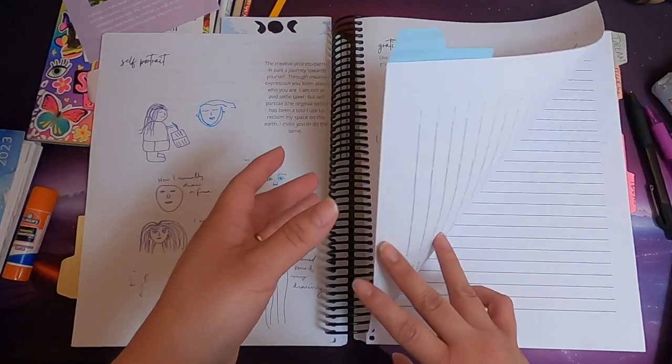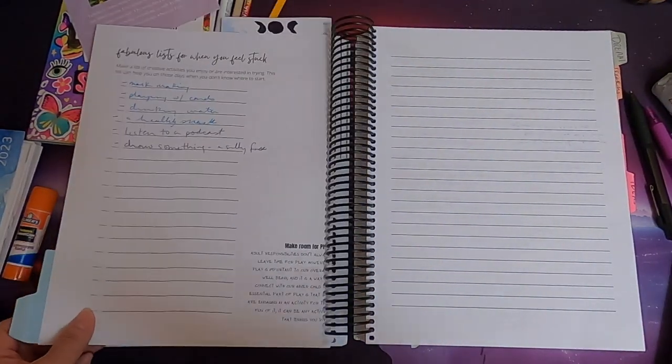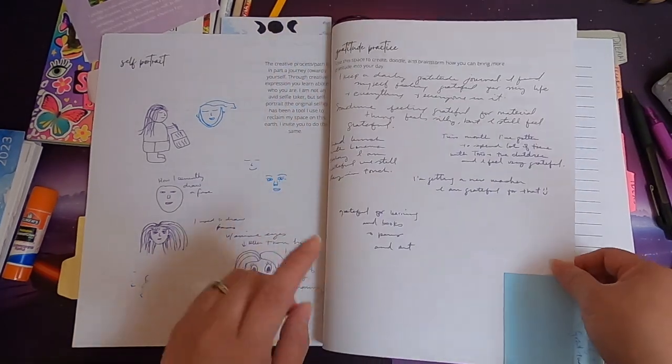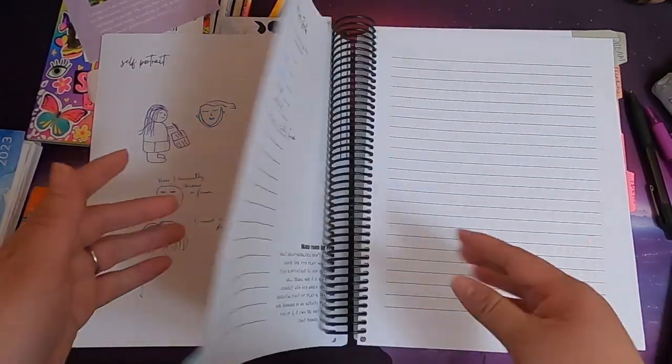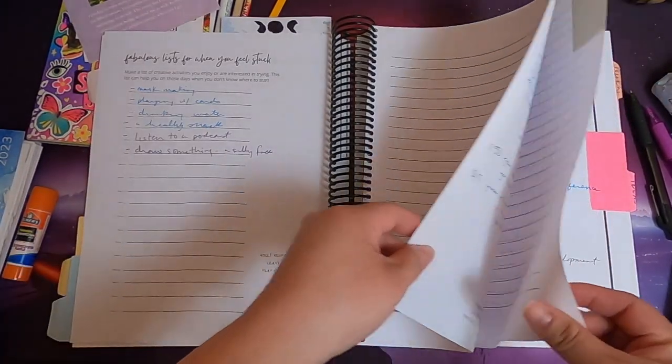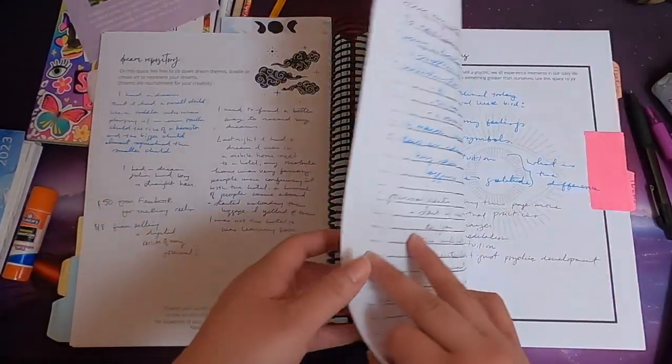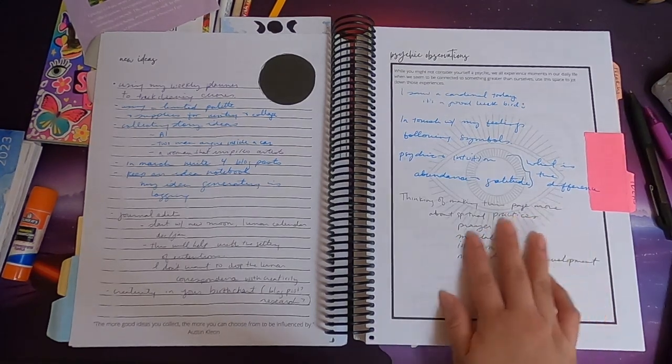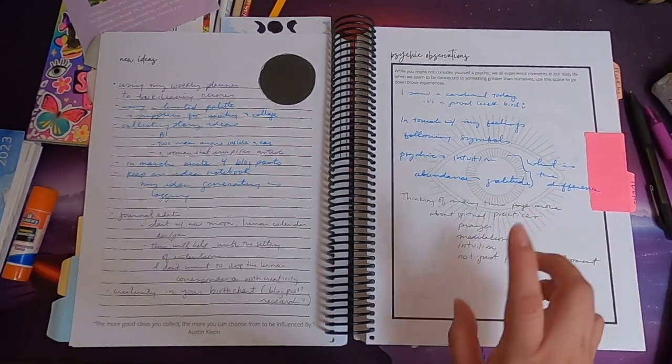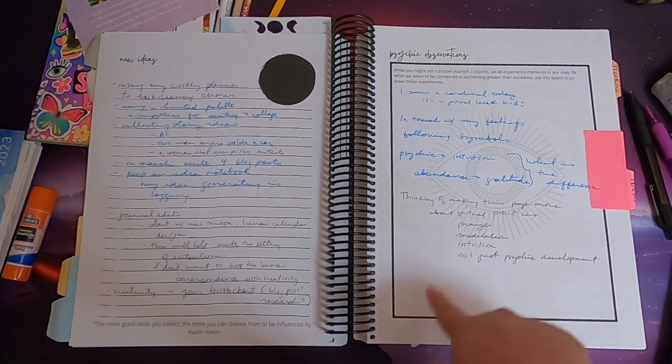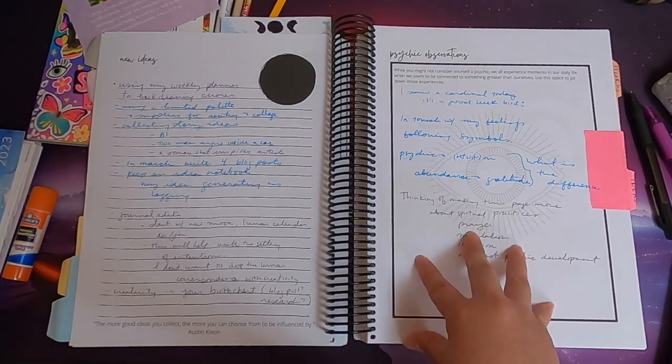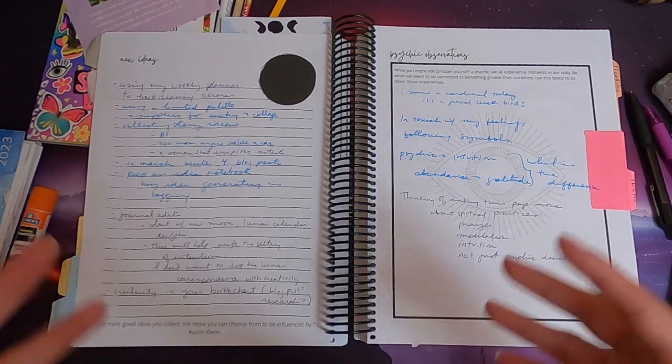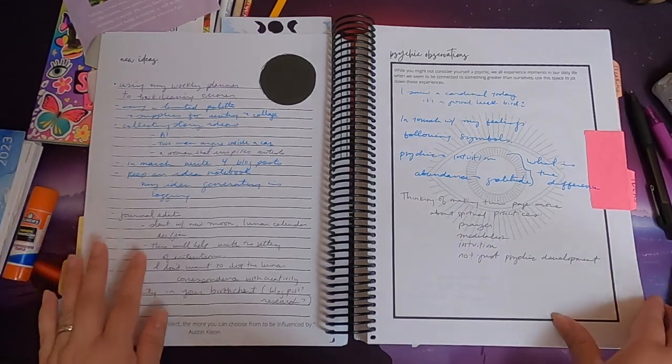So this month I was also reflecting on some of the pages that maybe could be combined for next year's edition. Like I'm thinking about the gratitude practice and the abundance page could be one. And I'm thinking of changing psychic observations to be a mixture of psychic observations, intuition, prayer, prayers like a record keeping or a place for you to write a prayer.